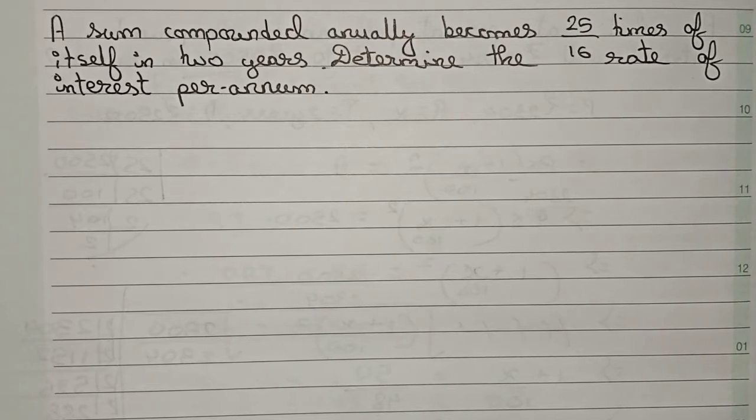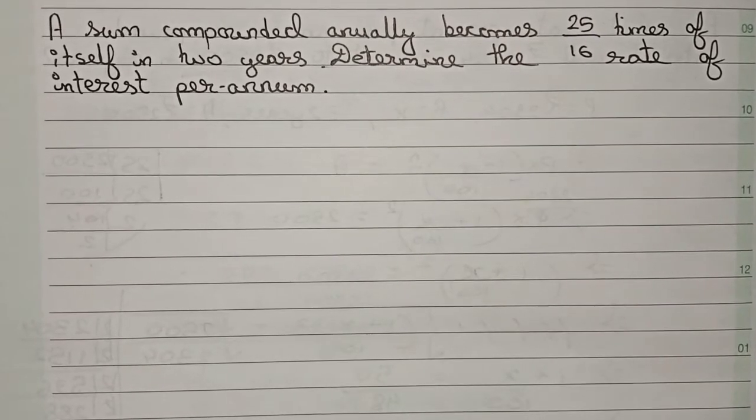Hello guys, welcome to this video. In this video, the question is: a sum compounded annually becomes 25 by 16 times of itself in two years. Determine the rate of interest per annum. So this is the question, so we solve this.